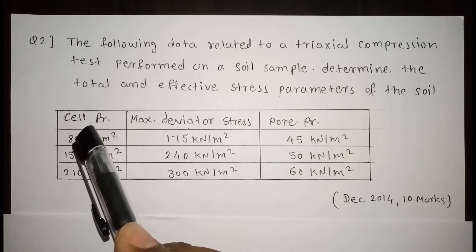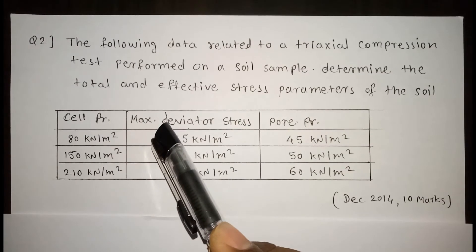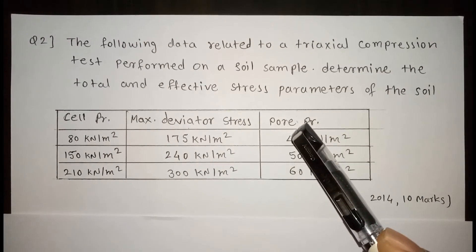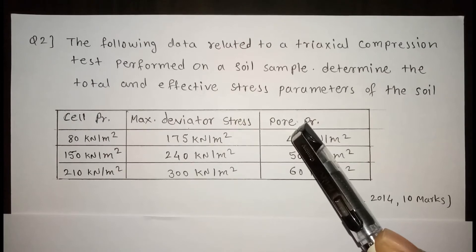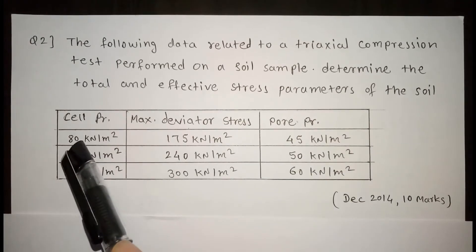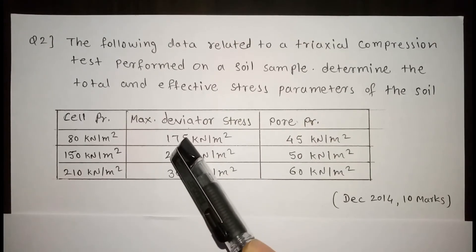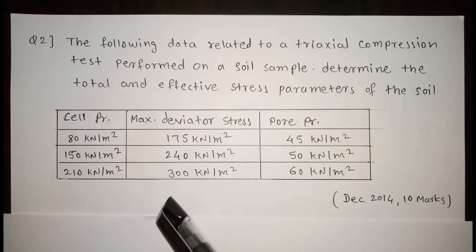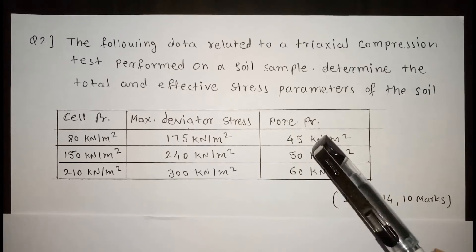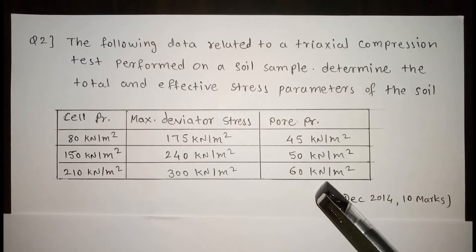In the first column, cell pressure is given. In the second column, maximum deviator stress. And in the third column, pore pressure is given. Cell pressure is 80, 150, and 210 kN/m². Maximum deviator stress is 175, 240, and 300 kN/m². Pore pressure is 45, 50, and 60 kN/m².